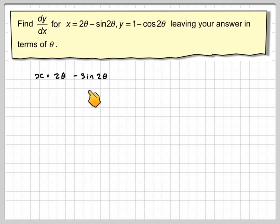So we've got x is 2 theta minus sine 2 theta. So if we differentiate that, differentiate 2 theta will get 2 if we're differentiating with respect to theta.